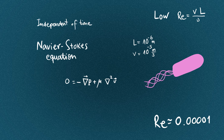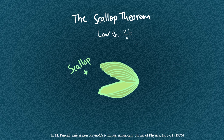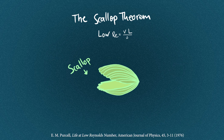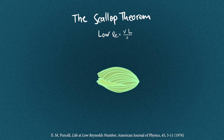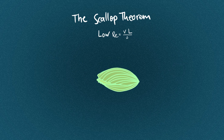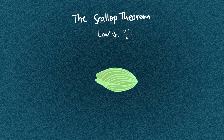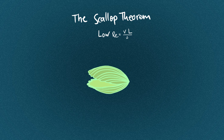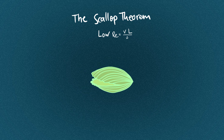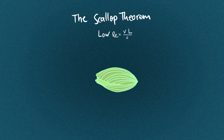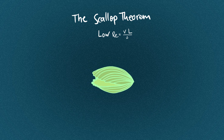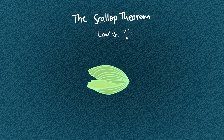The consequence is encapsulated in the scallop theorem. Consider a scallop at low Reynolds number that opens and closes its shell to swim in water. Opening the shell might push the scallop slightly forward, but as soon as it closes, the scallop traces back the same path and ends up in the exact same spot. Overall, the scallop doesn't move at all.